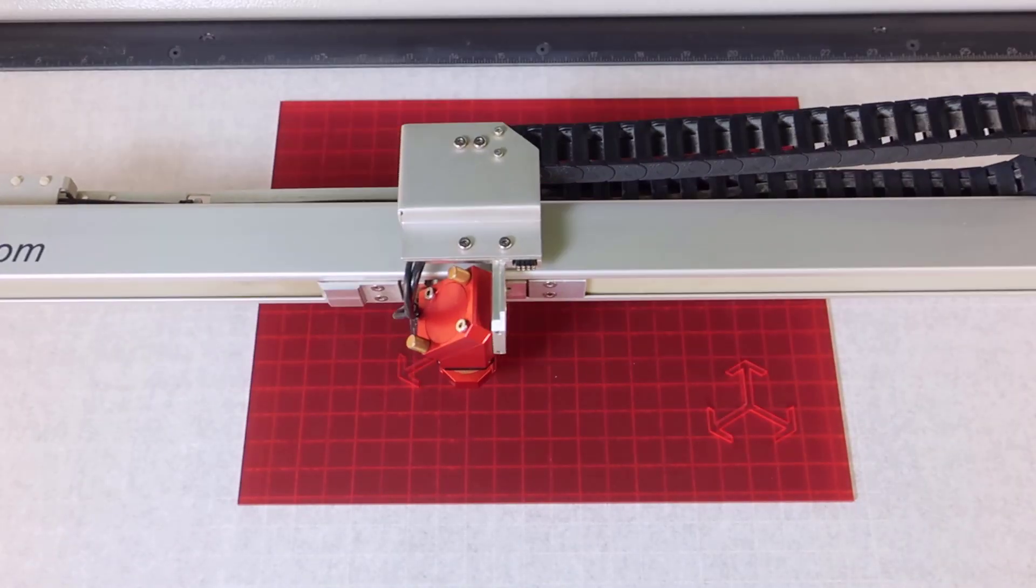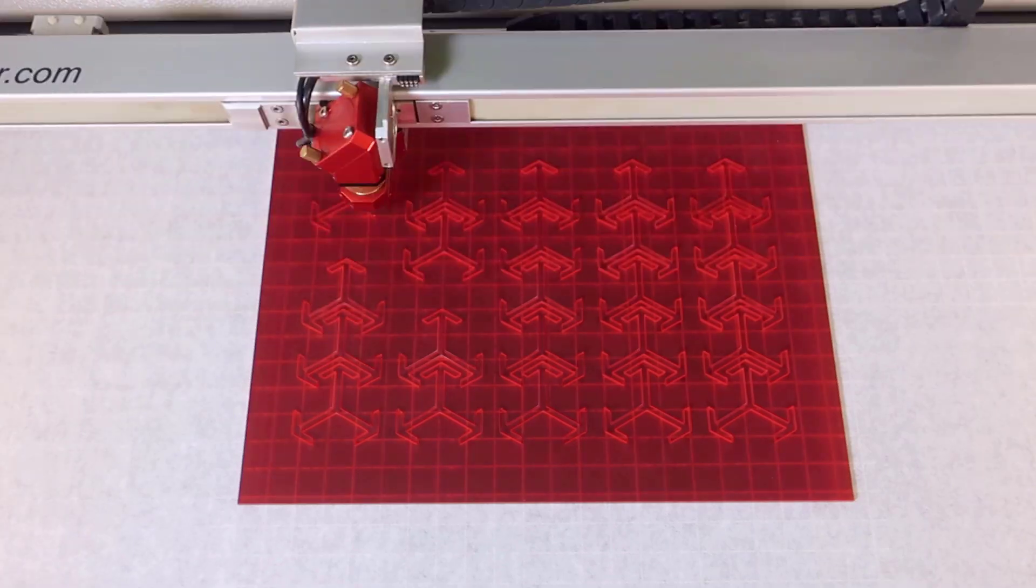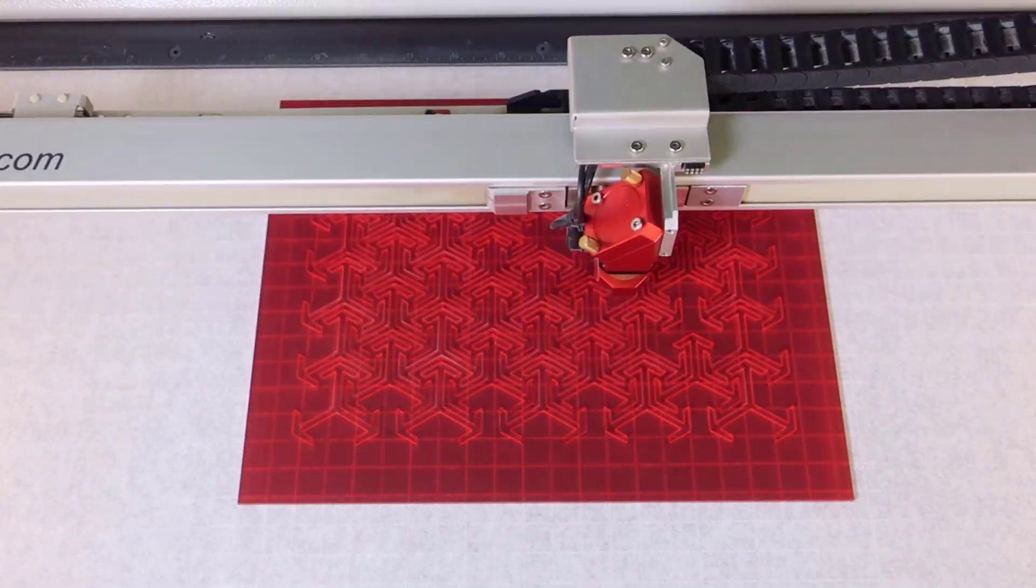The first thing you're going to do is place a rigid material into your laser system on your vector cutting grid and then go ahead and cut it out.